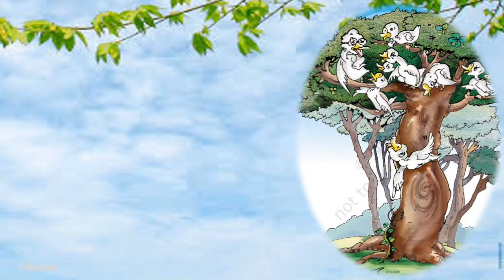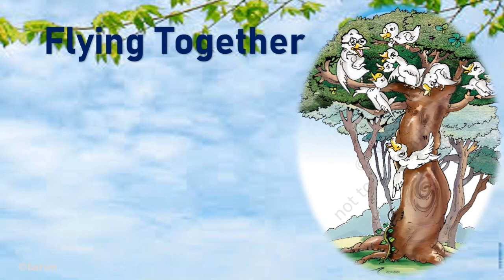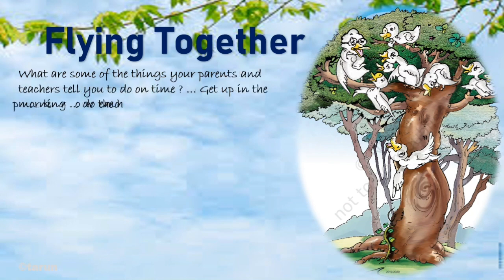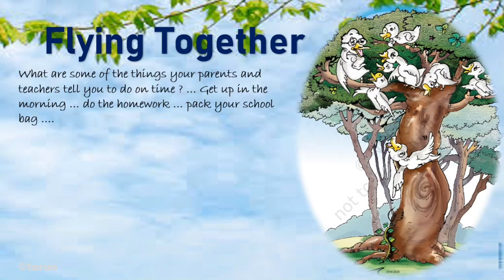Now let's go to the story. As all of you know, the story name is 'Flying Together,' F-L-Y-I-N-G T-O-G-E-T-H-E-R. In the beginning of the story, you can see in your textbook that three lines are written — we have to focus on them. Please concentrate on how I am pronouncing. Listen to this story again and again, make practice, and read properly.